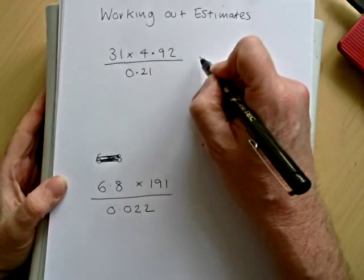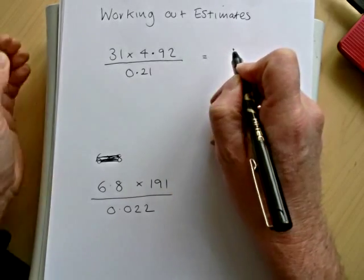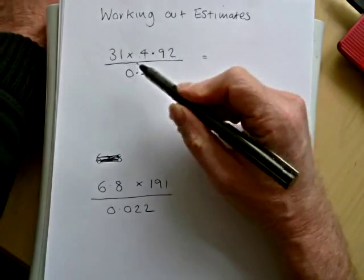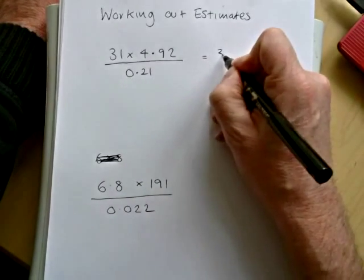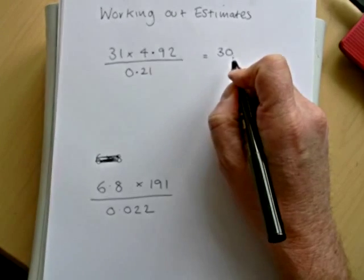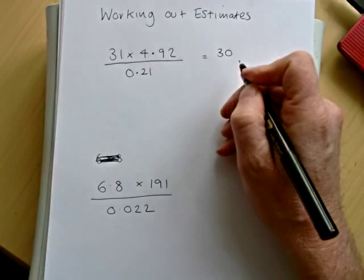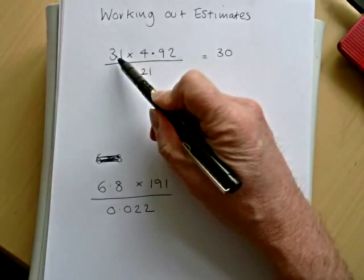So what we normally do is round each number to one significant figure. So 31 would be 30 to one significant figure. It wouldn't be 3, but 3 is not an estimate of 31, so we've got to be close to the number.